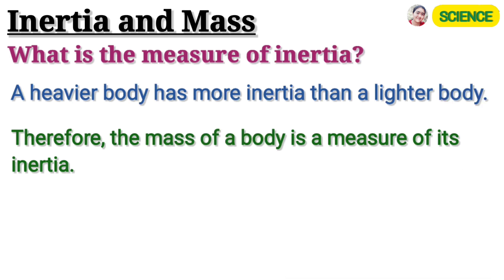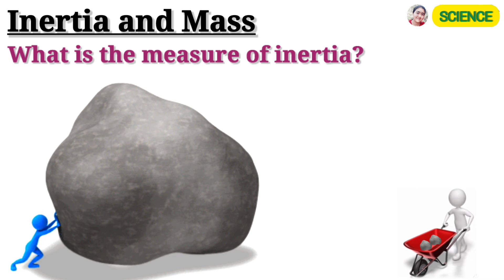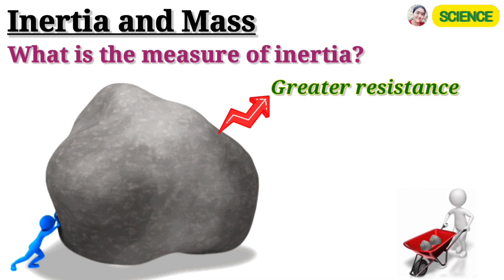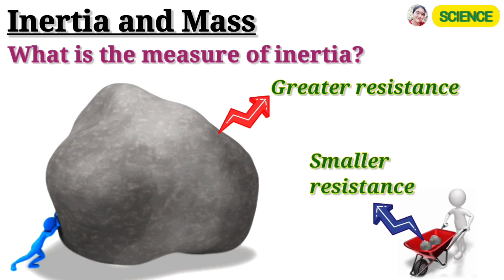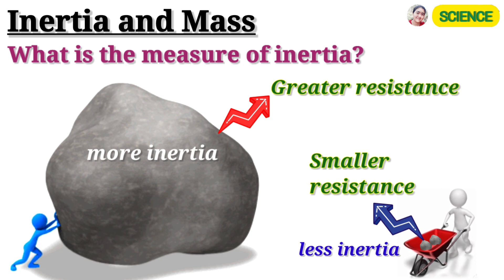From our common experience, we know that it is easier to move a small and light object than a large and heavy one. Thus, a large or heavy body shows a greater resistance to change its state of rest or of uniform motion than smaller or lighter bodies. Thus, a heavier body has more inertia than a lighter body. Therefore, we can say that the larger the mass, the larger is the inertia, and the smaller the mass, the smaller is the inertia.